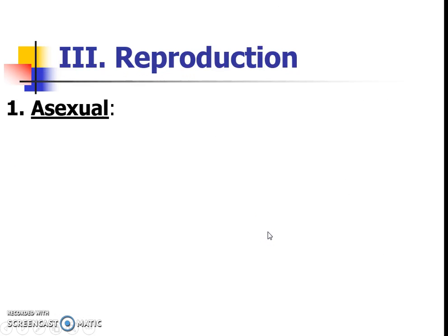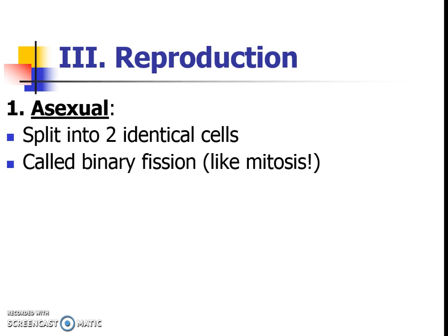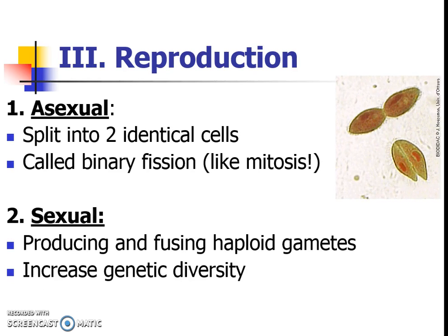There can be asexual reproduction for protists — that's splitting into two identical clone cells. That process is called binary fission, which looks a lot like mitosis. And then there's also sexual reproduction, where these organisms would produce and then fuse their haploid gametes. That's the one that would be able to increase genetic diversity because it's not clones.